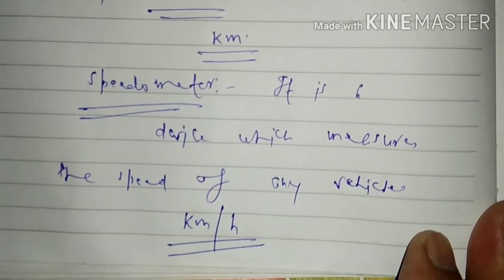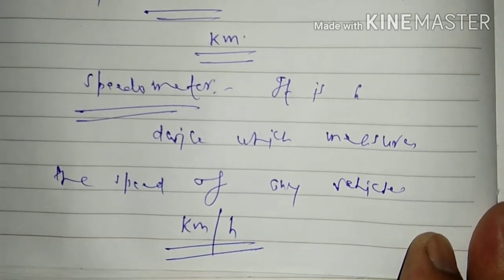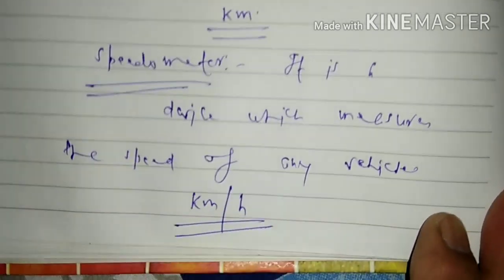This device measures speed generally in kilometers per hour, and you will see that in our different examinations this question is asked again and again: what is odometer and what is speedometer?